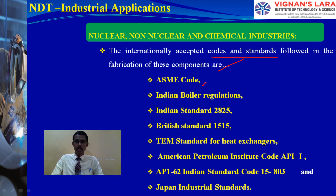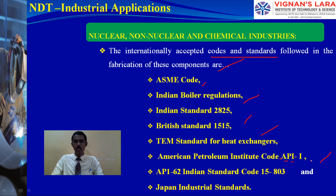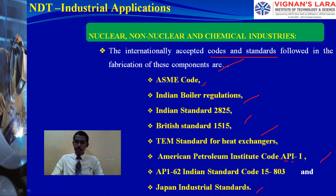The codes followed in engineering fields include: ASME code, Indian Boiler Regulations, Indian Standard 2825, British Standard 1515, TEMA standards for heat exchangers, API 162 (American Petroleum Institute code), Indian Standard code 15803, and Japan Industrial Standard. These are the various standards and codes followed to fabricate boiler and pressure vessel components.